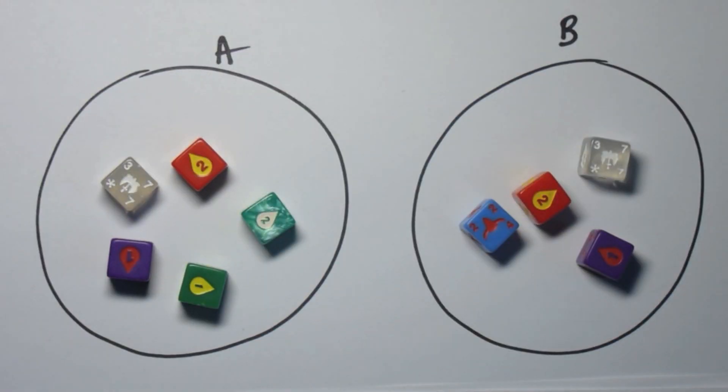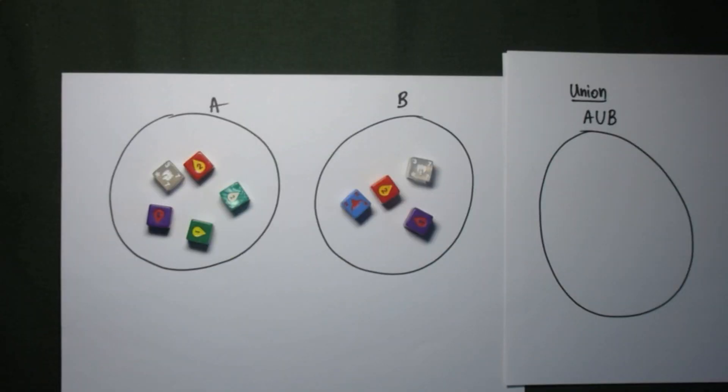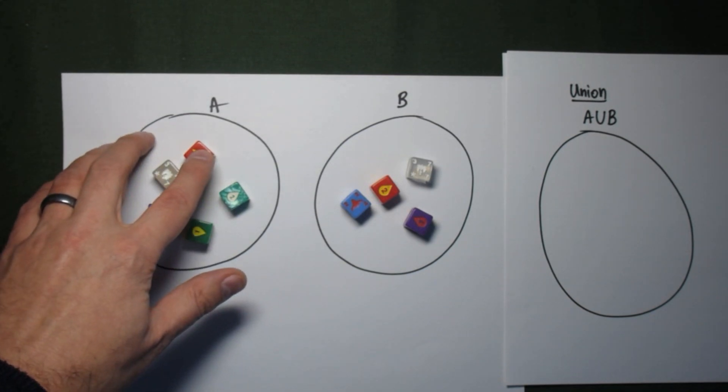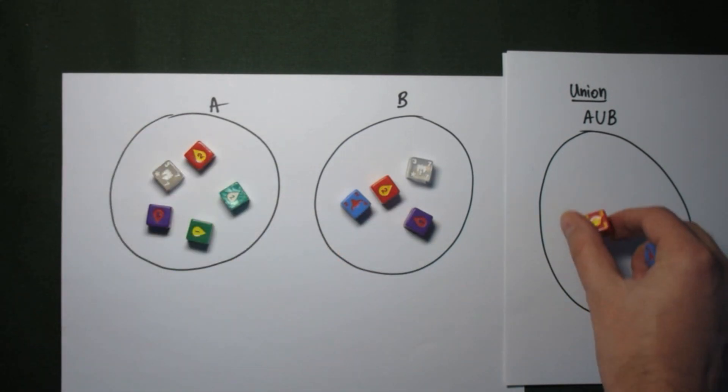To give a visual example of the union and the intersection, let's take a look at these two sets here. We have the set A and the set B. Each of them contain certain colored dice. So if we want to look at the union, we have to take a look at the two sets and see what's contained in one or the other set, or possibly both.